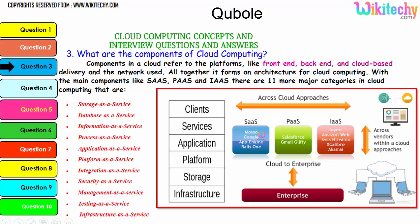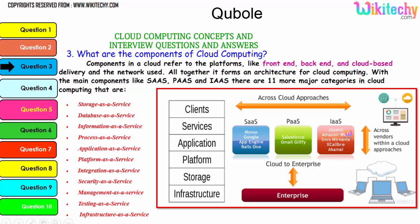These additional service categories are associated with the three major services to form cloud computing. Examples include: for Software as a Service — App Engine and Google Maps; for Platform as a Service — Gmail and Salesforce; and for Infrastructure as a Service — Amazon Web Services, Rackspace, and Akamai.